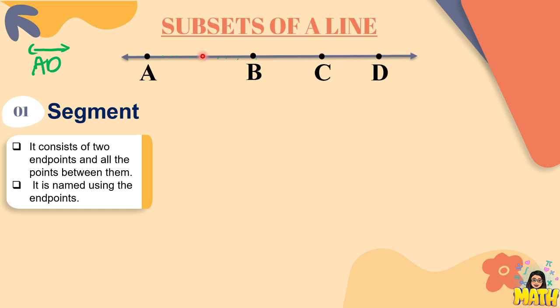In this line AD, we know that this is being extended in both directions. Kaya ito may symbol na arrow. Pero kapag sinabi nating segment, we simply choose two points on the line and we simply emphasize that length, which is what we call the segment. It consists of two endpoints, point A at point B.